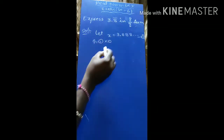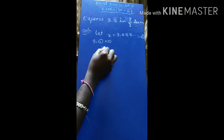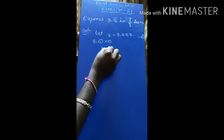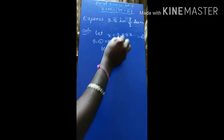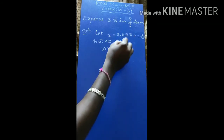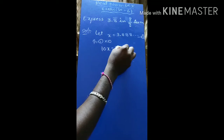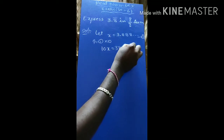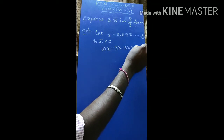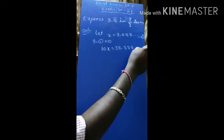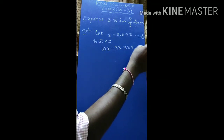Because when we multiply by 10, we get 10x equal to 38.888... and so on. This is equation 2.